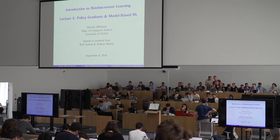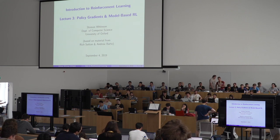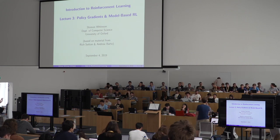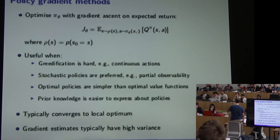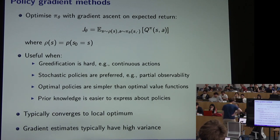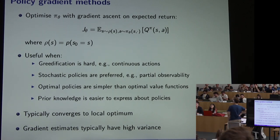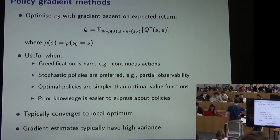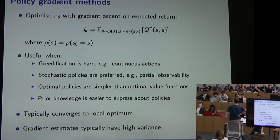Yesterday we already started on policy gradient methods, so let me give a quick review of what we already talked about. Policy gradient methods are a family of methods that explicitly optimize a policy for a given MDP by performing gradient ascent. We explicitly parameterize our policy with parameters theta, then estimate the gradient of the expected return with respect to theta — this quantity J — which is like the value functions we've seen but where we marginalize out the state.